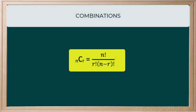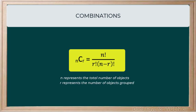Remember, n choose r, or nCr, is equal to n factorial all over r factorial multiplied by the difference between n and r factorial. Recall that n represents the total number of objects available for us to choose from, and r represents the number of objects that will be combined or chosen from that group.